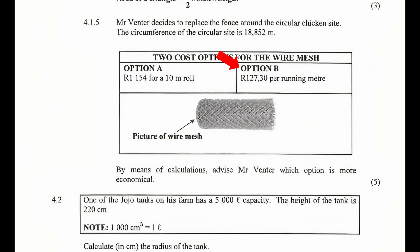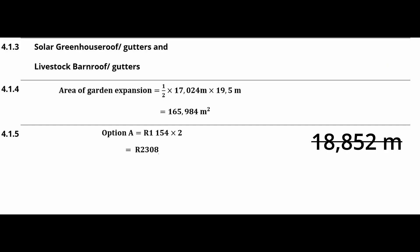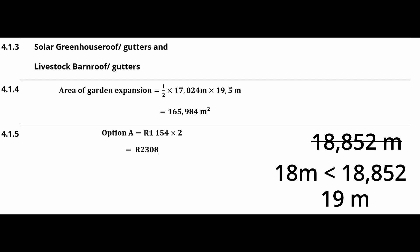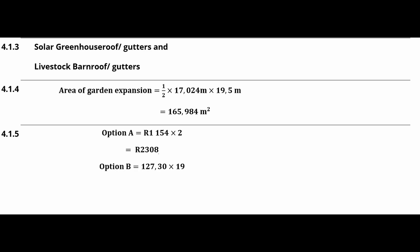For Option B, Mr. Fenter will have to buy 19 running meters because this option is sold in one-meter lengths. He cannot buy exactly 18.852 meters, and 18 meters would be too little, so he must buy 19 meters. 19 meters will cost R127.30 per meter multiplied by 19 meters, which equals R2,418.70. We would therefore advise Mr. Fenter to choose Option A because it is the more economical option.